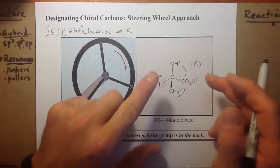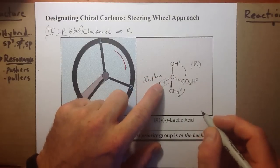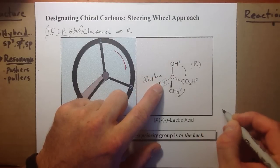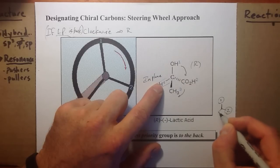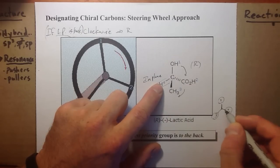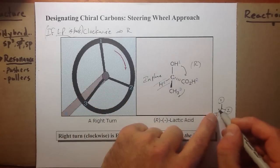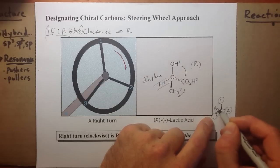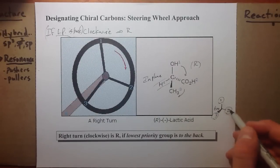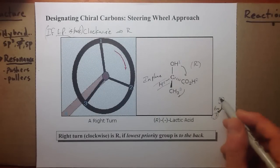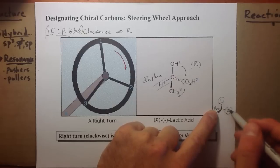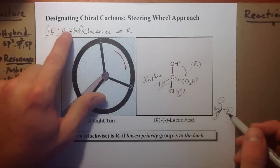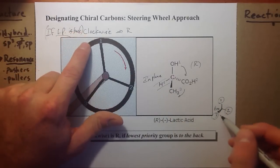It's much easier if this is shown to the back. If it's to the back and this was wedge, we could more easily say it's clockwise. One, two, three. H is on the dash, that means LP is to the back. Clockwise is R.